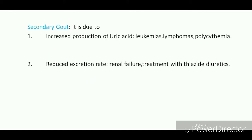Secondary gout is due to increased production of uric acid or decreased excretion of uric acid. Increased production occurs mainly in rapidly growing malignant tissues such as leukemias, lymphomas, and polycythemia, where increased cell turnover is accompanied by increased degradation of excess nucleic acids to uric acid. Increased tissue damage due to trauma also leads to increased production of uric acid.